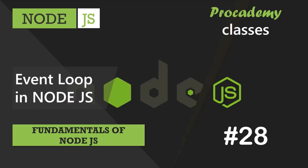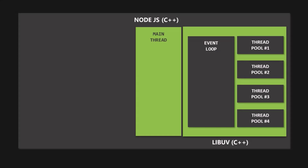In this lecture, let's learn about the event loop in Node.js and how it works. In the last lecture, we learned that the event loop is the heart of Node.js architecture. This is the slide from our last lecture where I showed you the order of execution of Node.js code. Here we are mainly going to focus on the event loop part.